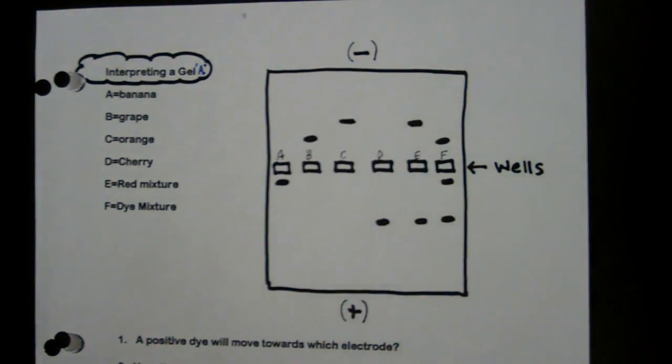And in well A, we've got banana. In B, we've got grape. C, orange. D, cherry. E is a red mixture, and F is just dye mixture.